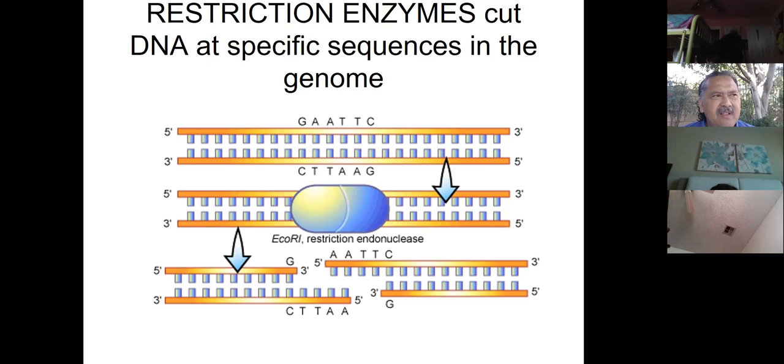So you spell it R-A-C-E-C-A-R and spell it backwards. It's the same word. The longest one that people generally know is when it goes, a man, a plan, Panama. You know, we're making the Panama Canal. So that's a pretty long palindromic sequence. But what a restriction enzyme does is it recognizes that palindromic sequence and then it cuts. Well, it's not a clean cut, though. It cuts right between the A and the G.